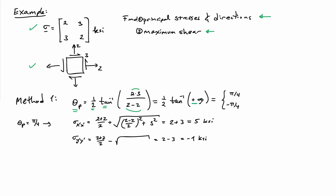So it's one-half the arc tangent of plus infinity. And the solution to that equation is pi over 4 and minus pi over 4. And so we need to pick the one that's going to give us the maximum.